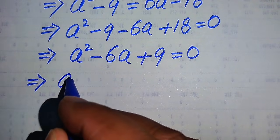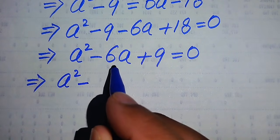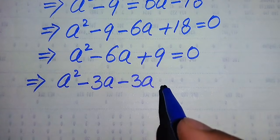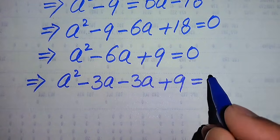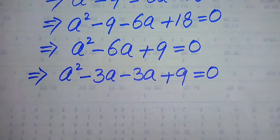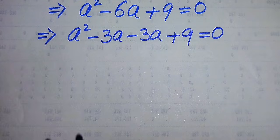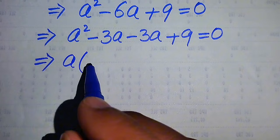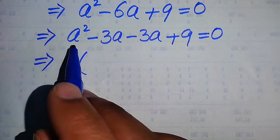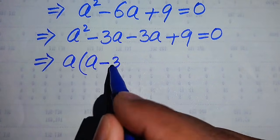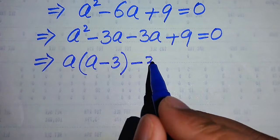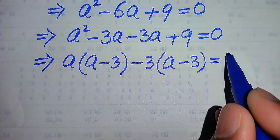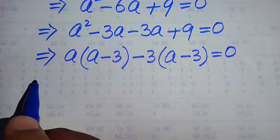When we break the middle term, a² minus 3a minus 3a plus 9 equals 0. In the next step, we take a as common from the first two terms, giving a(a minus 3), and then take minus 3 as common from the last two terms, giving minus 3(a minus 3), and this whole equation equals zero.